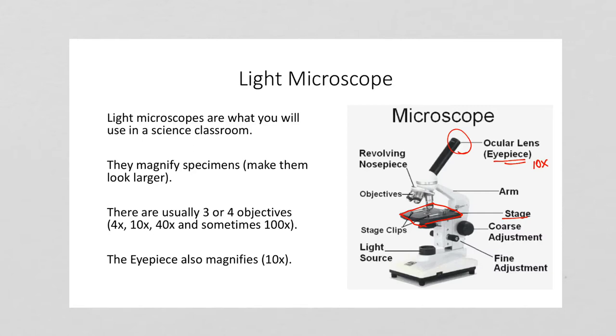You have the coarse focus, sometimes known as the coarse adjustment, and then the fine focus. By turning those, you move the stage up and down away from the light source when it's turned on, and that allows you to make the image clearer. It allows you to put the image into focus.